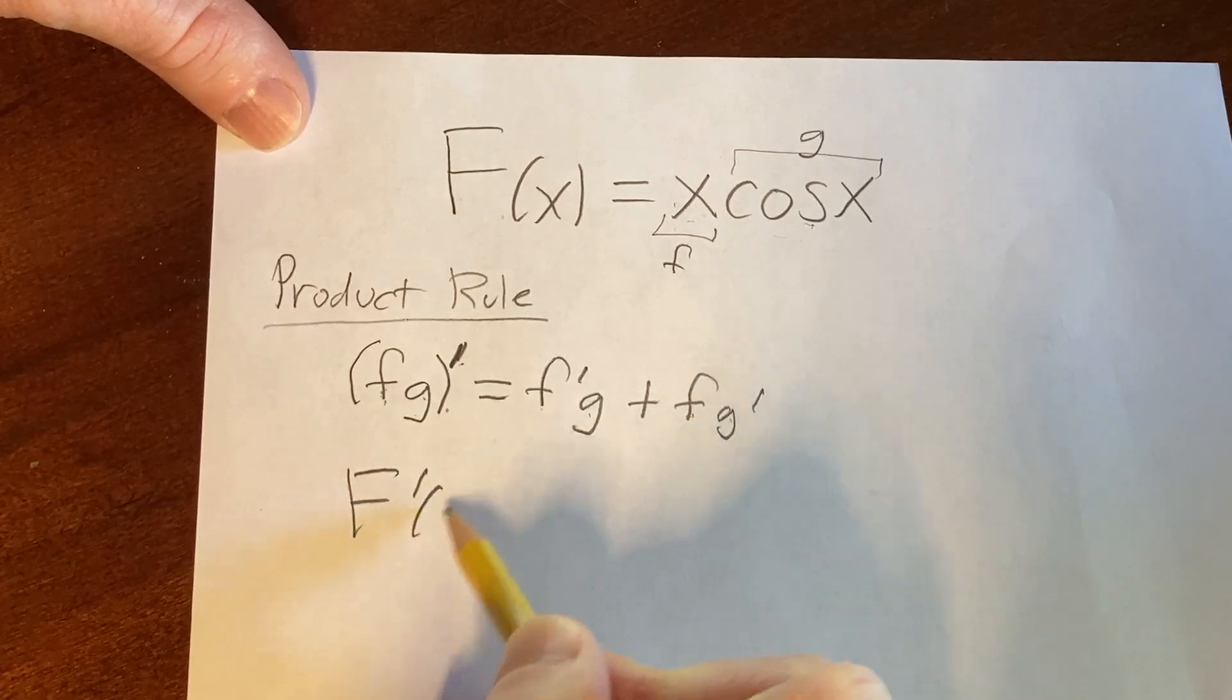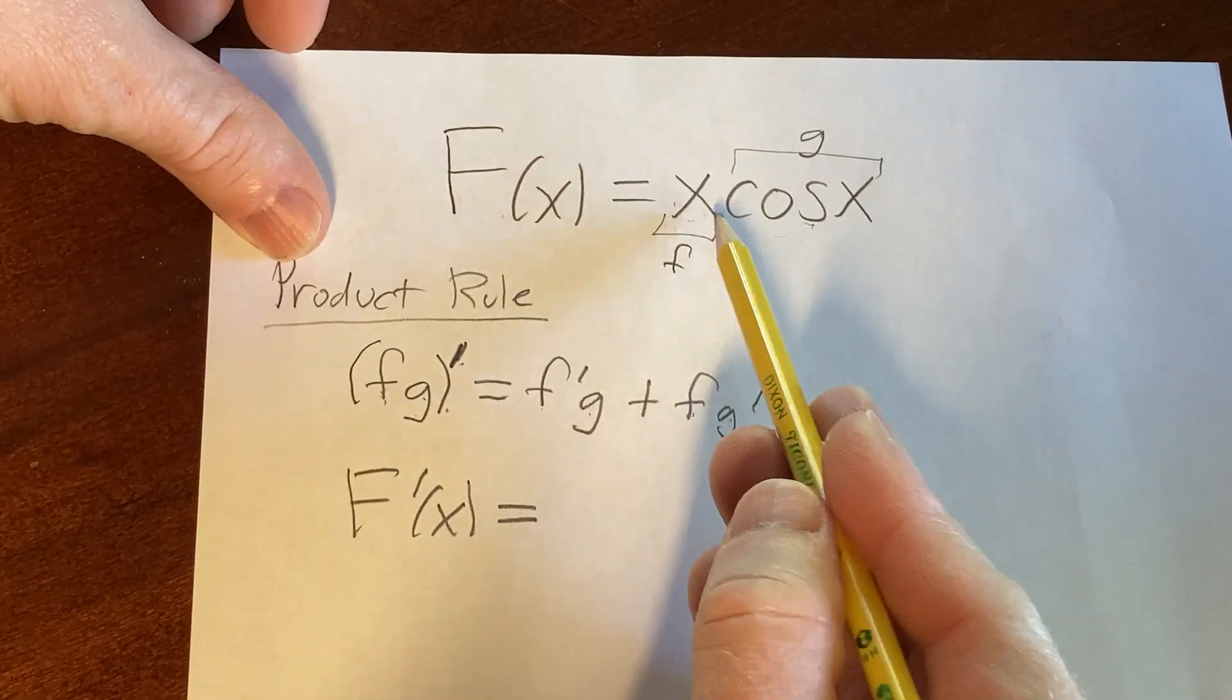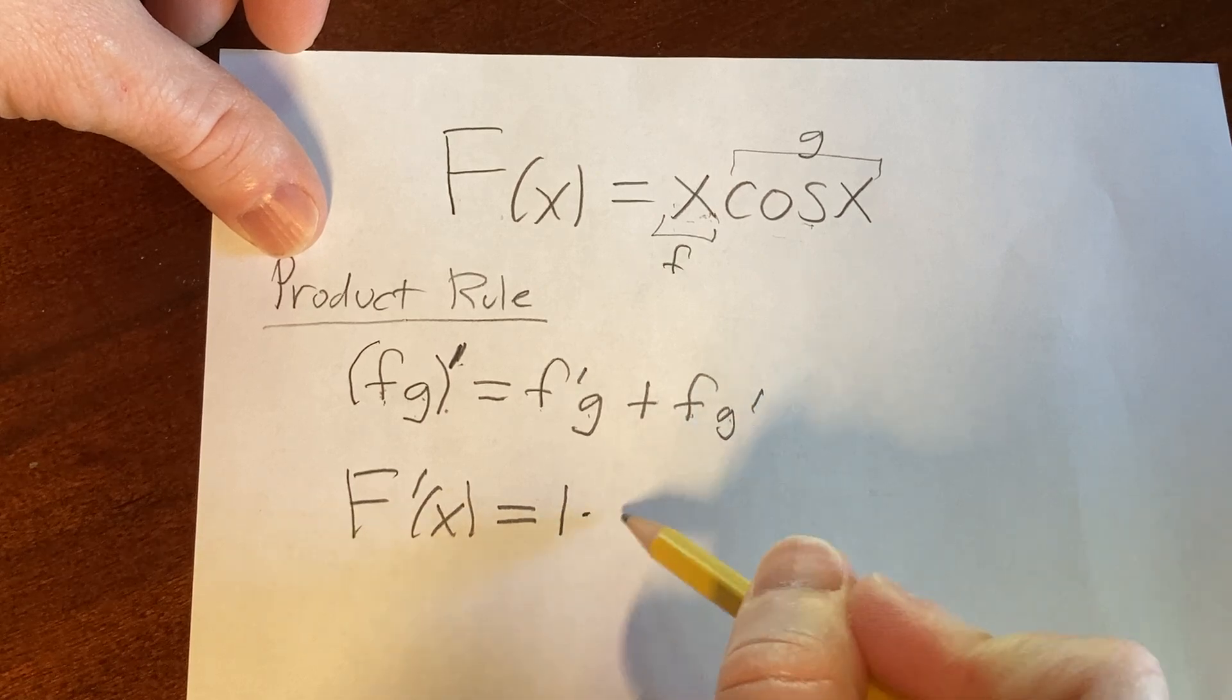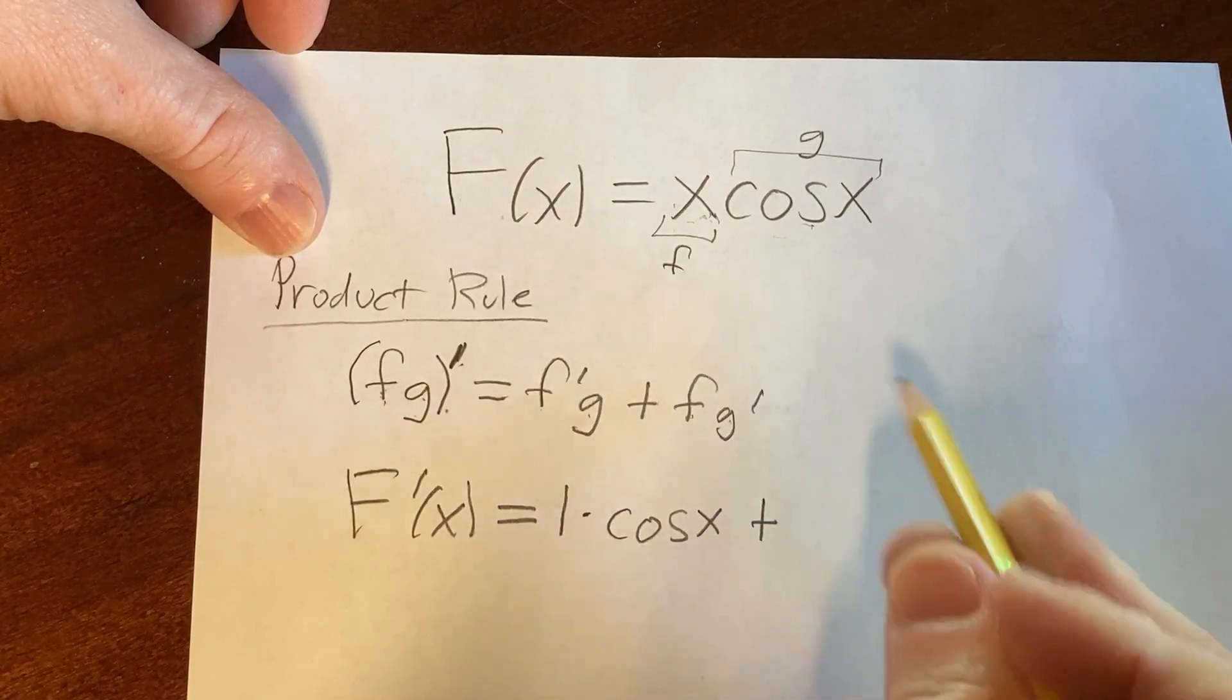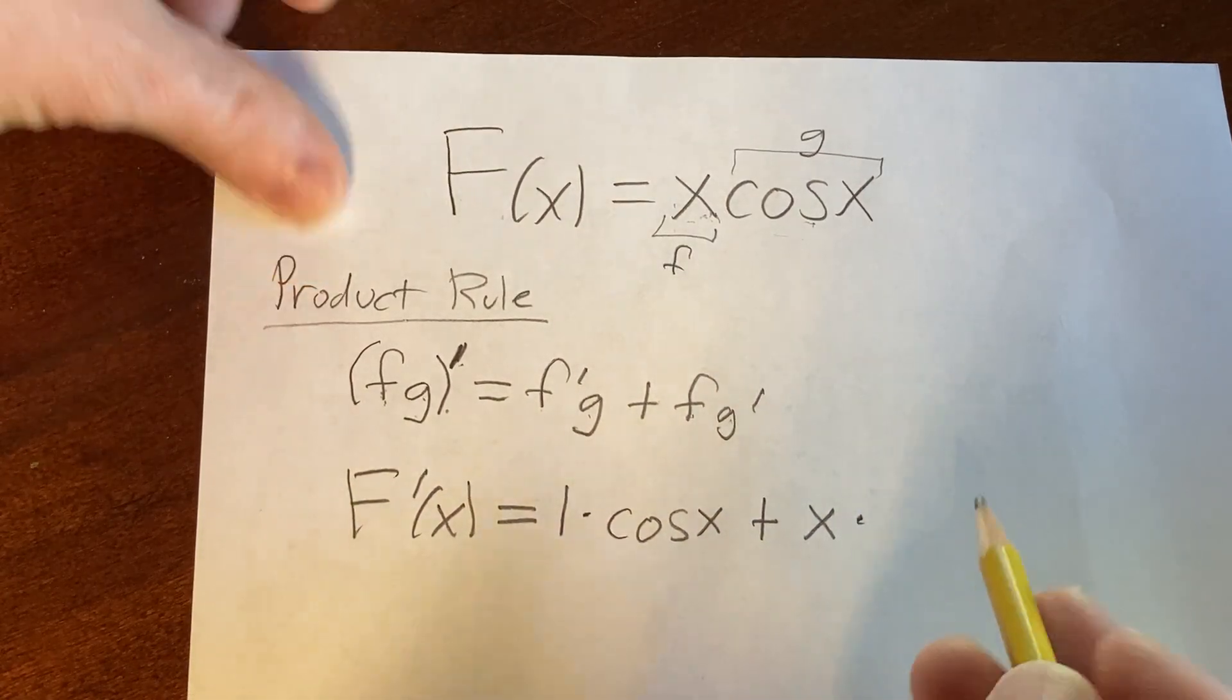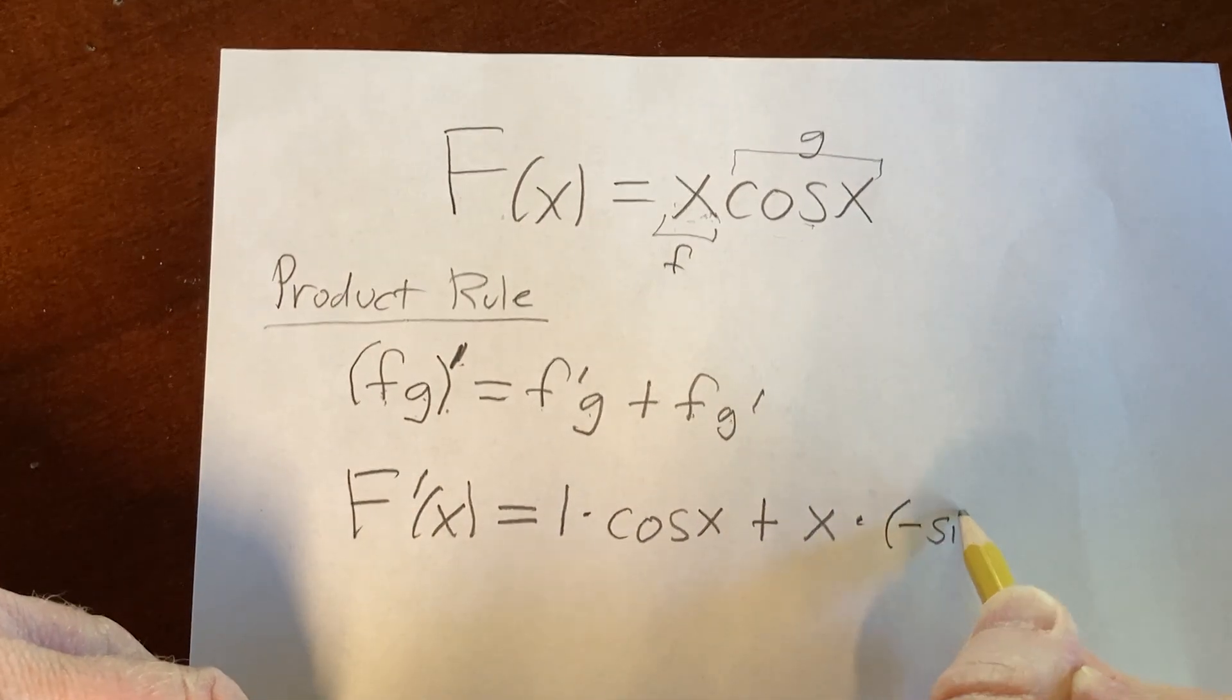big F prime of x equals, so applying it here we take the derivative of the first, which is the derivative of x, which is 1 times the second, which is cosine x, plus the first, which is just x, times the derivative of cosine. The derivative of cosine is negative sine, so this is parentheses negative sine x.